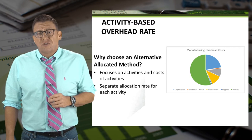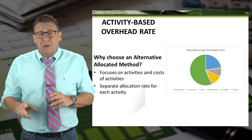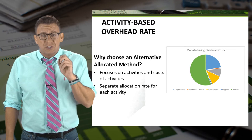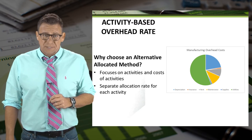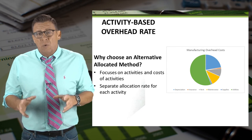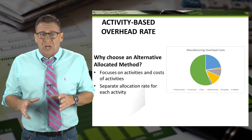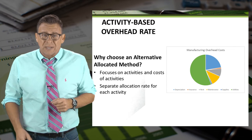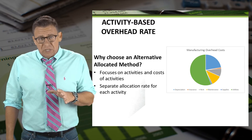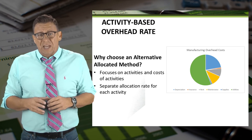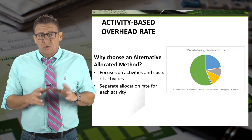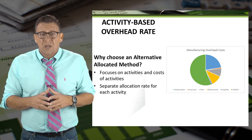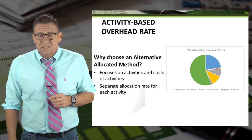Many companies choose to refine or improve their method of overhead allocation to try to achieve more accurate product costs. This is because the plant-wide rate method does not do a good job of matching the cost of overhead resources to the products. Additionally, more simple allocation systems result in over-costing or under-costing their products. We call this cost distortion.